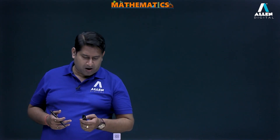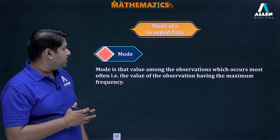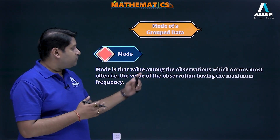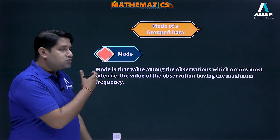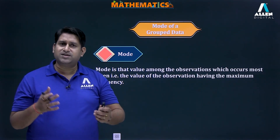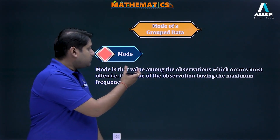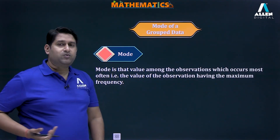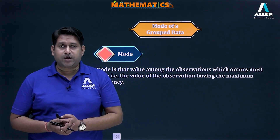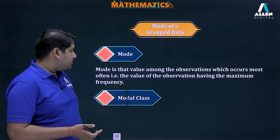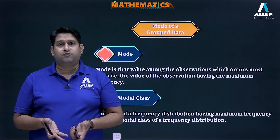So the mode of grouped data is that value among the observations which occurs most often — most often means its frequency is the highest. The observation having maximum frequency will be the mode of that data.